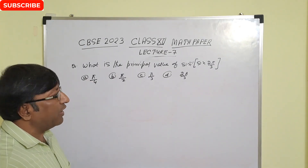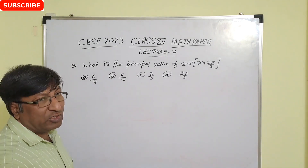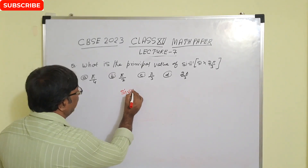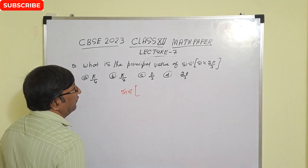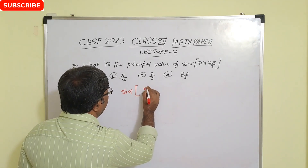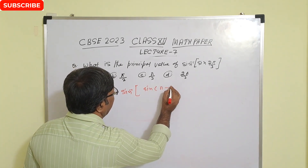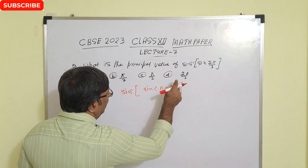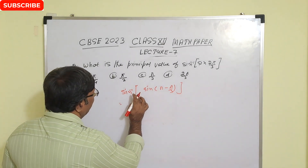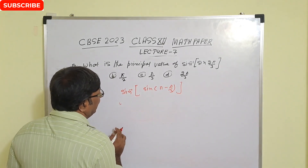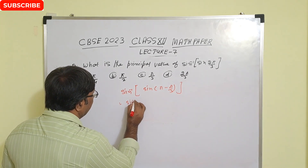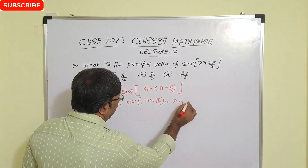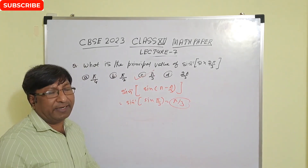What is the principal value of sin⁻¹(sin(2π/3))? We can write sin(2π/3) as sin(π - π/3). We know sin(π - θ) = sin θ, so this becomes sin(π/3). Therefore sin⁻¹(sin(2π/3)) = π/3. Option C is the correct answer.